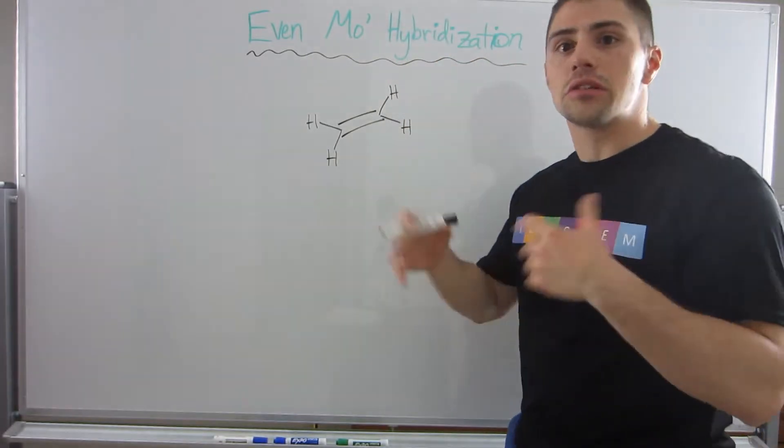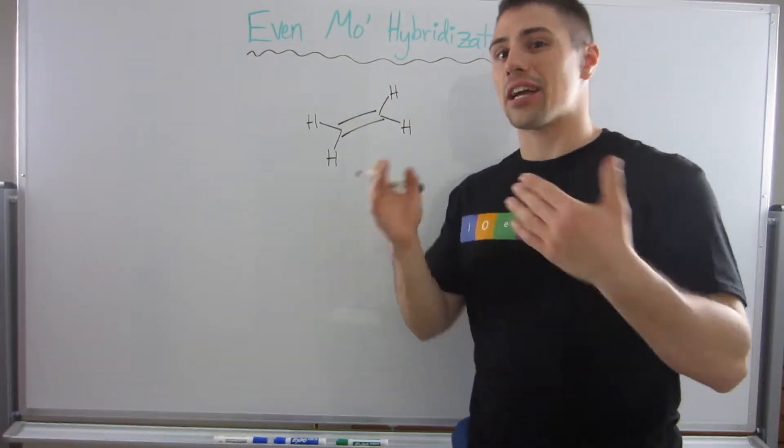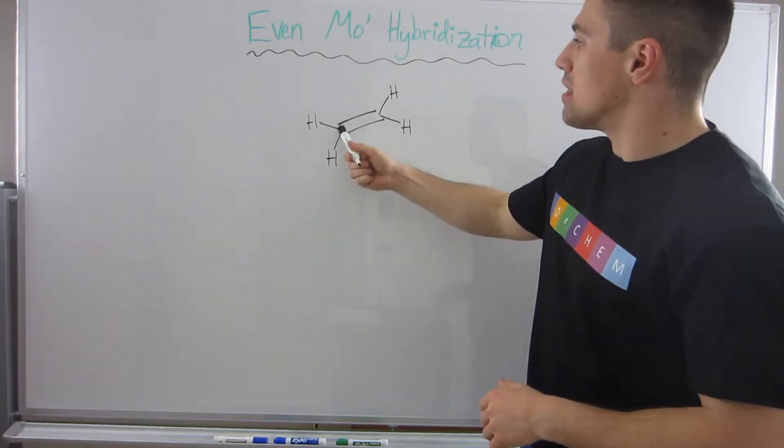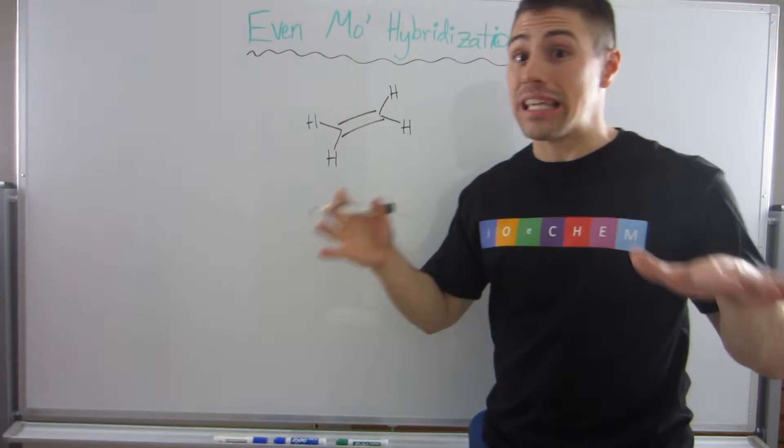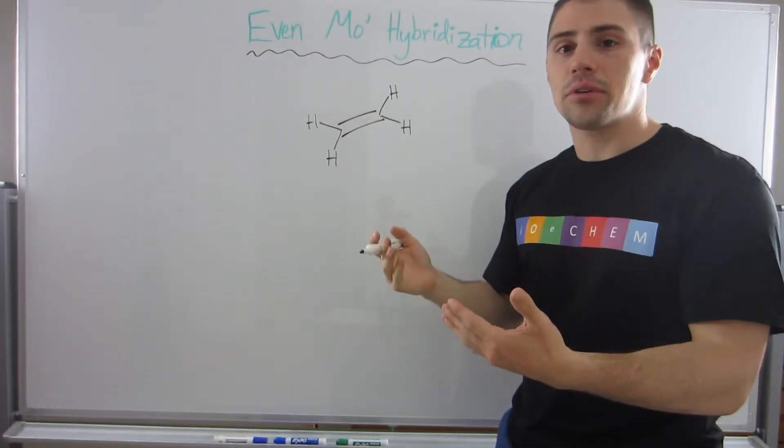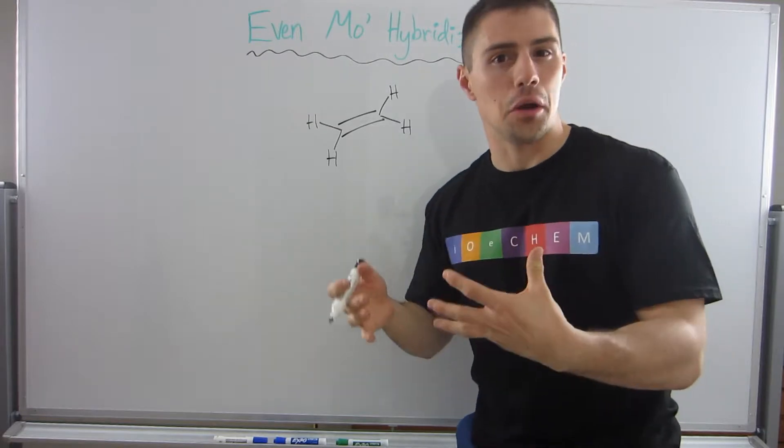Let's do a little review before I add the extra bit of hybridization knowledge we need. If we look at ethene, a two-carbon alkene with a double bond, let's assign some hybridization and then really dig into what's going on.